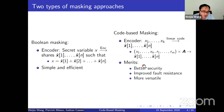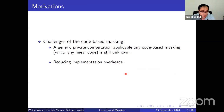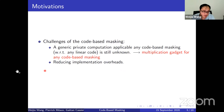There are several merits of code-based masking including security, fault resistance, and versatility. But despite these merits, there are several challenges. The first challenge is about generic private computation applicable to any code-based masking, which is still unknown to the best of our knowledge. Additionally, code-based masking is more complicated, making it less efficient than Boolean masking, so reducing implementation overheads is another challenge.